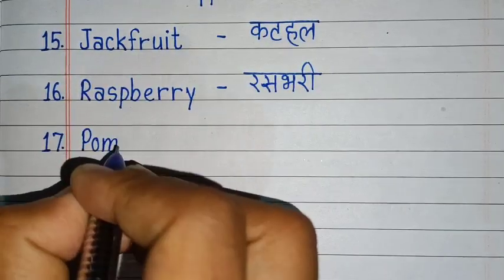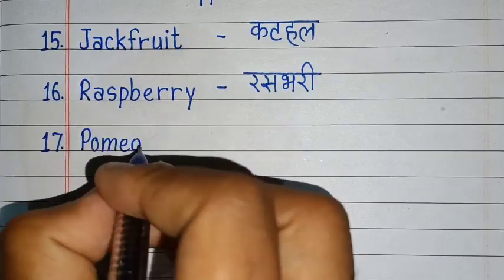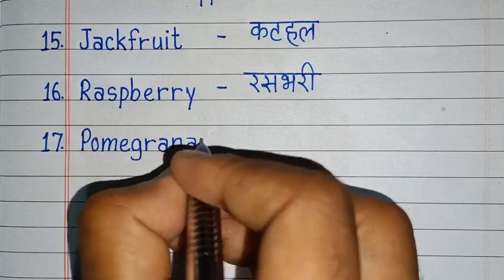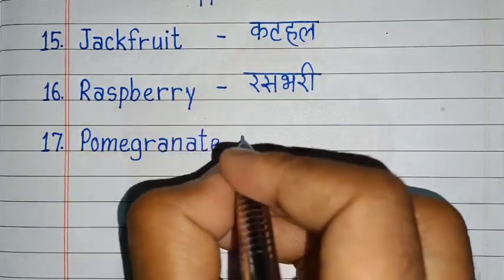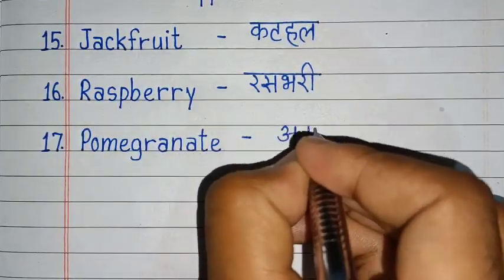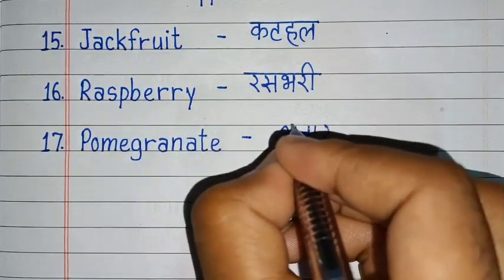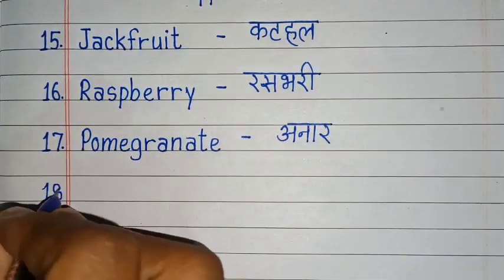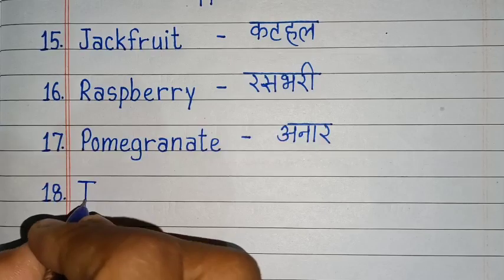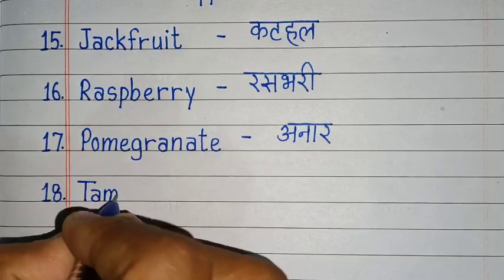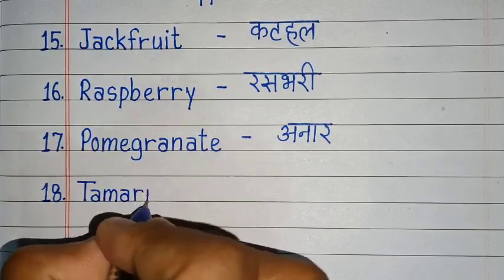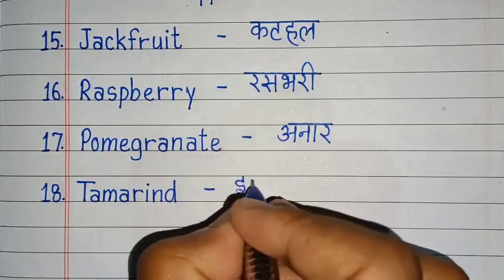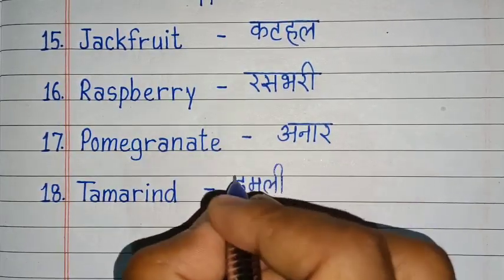P, O, M, E, G, R, A, N, A, T, E. Pomegranate. Pomegranate means anar. T, A, M, A, R, I, N, D. Tamarind. Tamarind means imli.